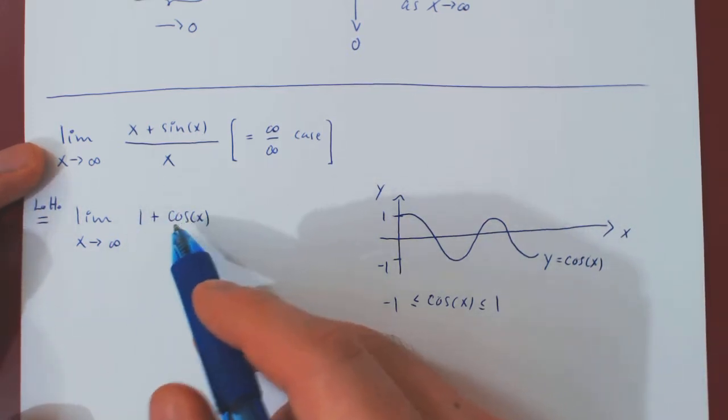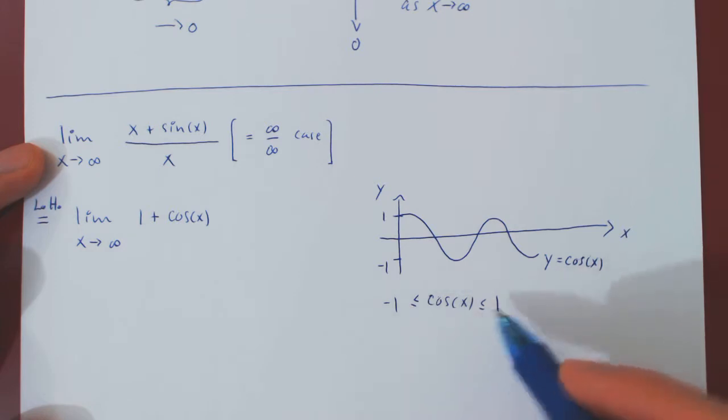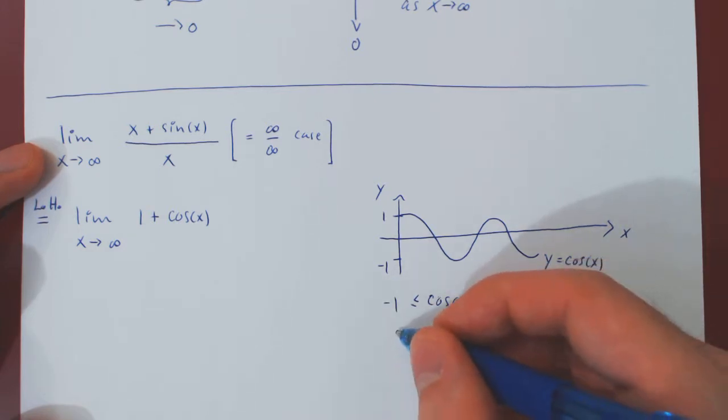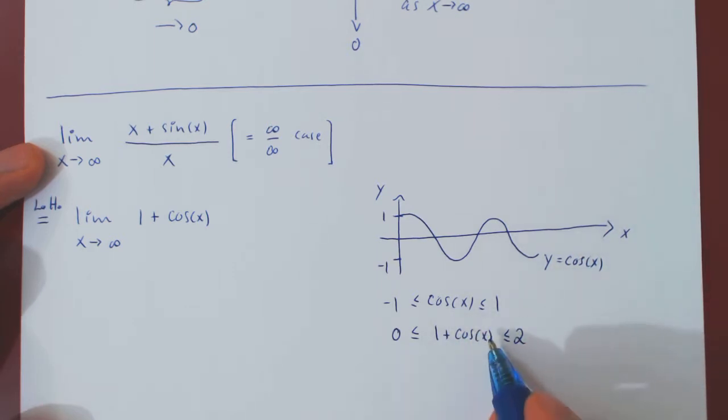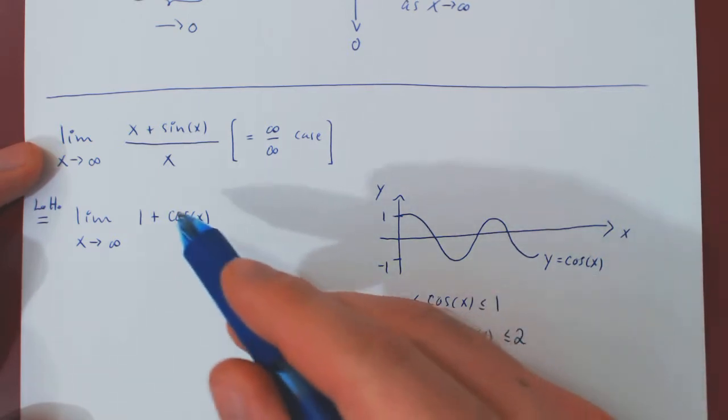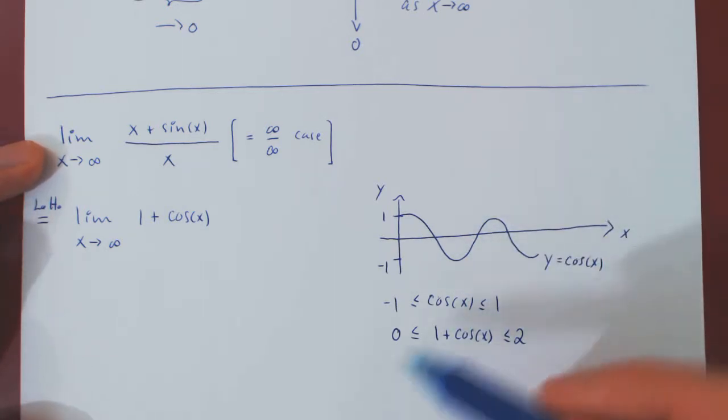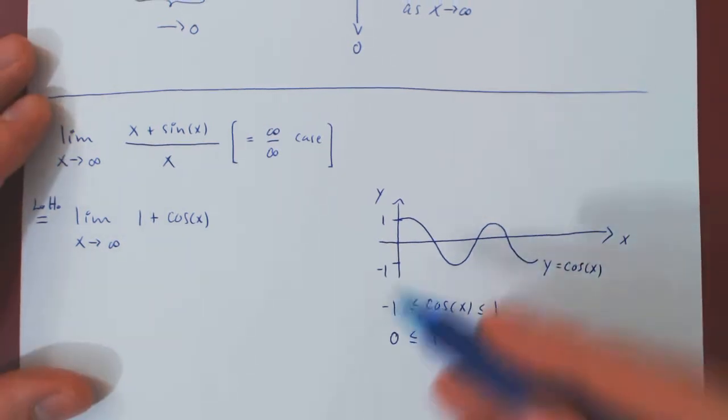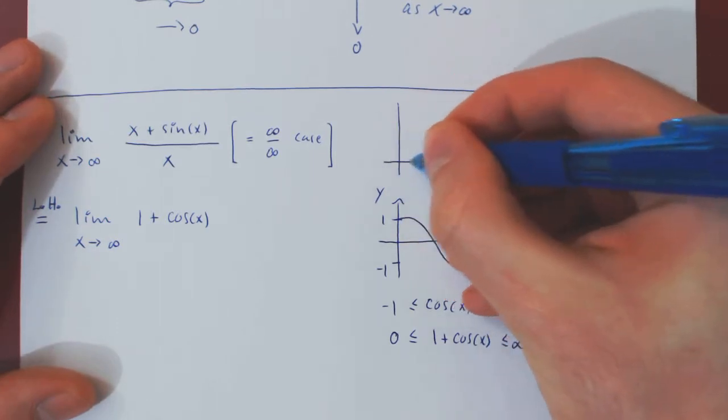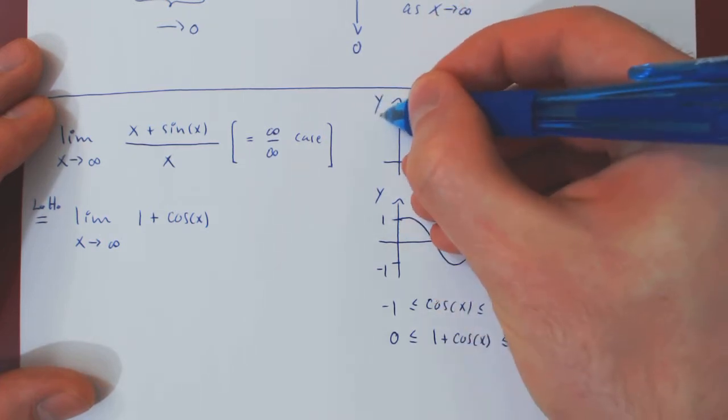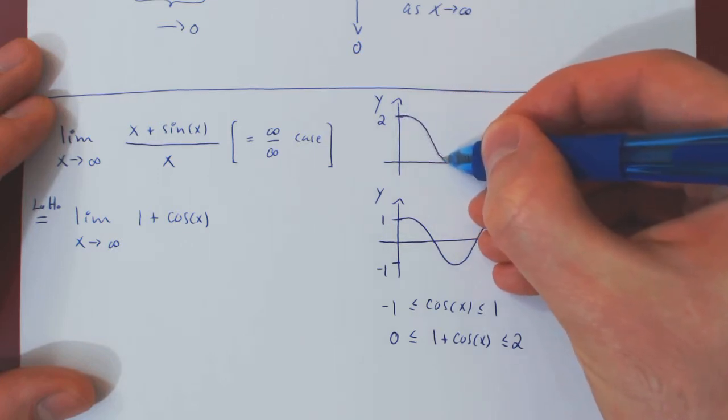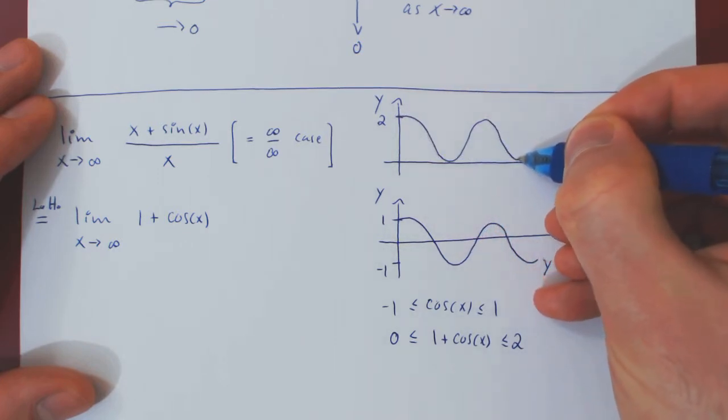If we look at the expression, therefore, 1 plus cos of x, if we add 1 across both inequalities, 1 plus minus 1 is 0, 1 plus 1 is 2, so 1 plus cos of x will always be between 0 and 2. But, if you think of this function, all we've done is we've added to cos of x 1. So, we've just shifted this function up by 1. So, the graph of 1 plus cos of x, well, 1 plus 1 is 2, so it will begin at 2, and then it will oscillate forever between 0 and 2.